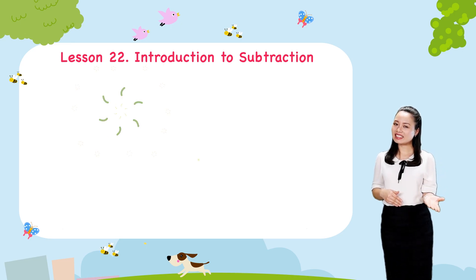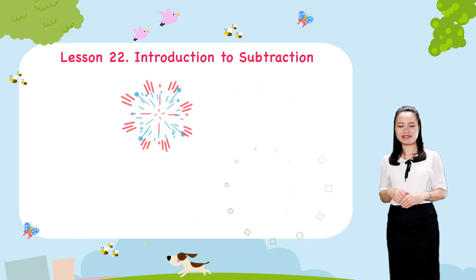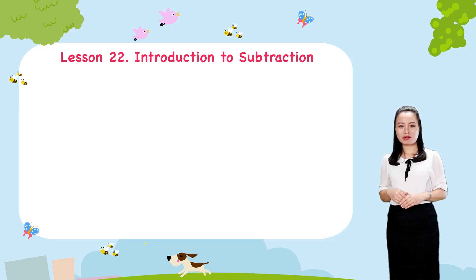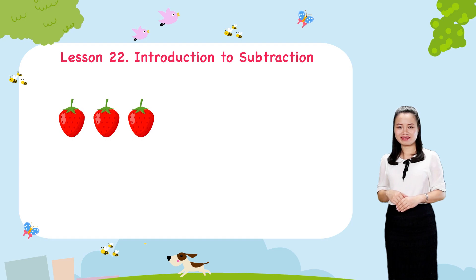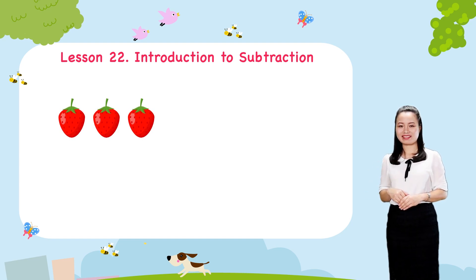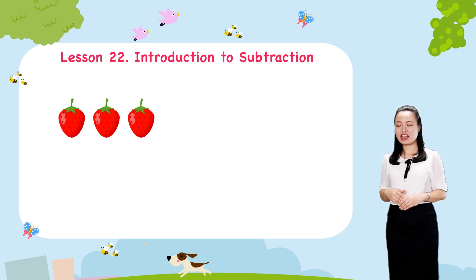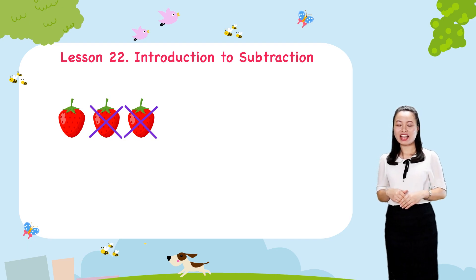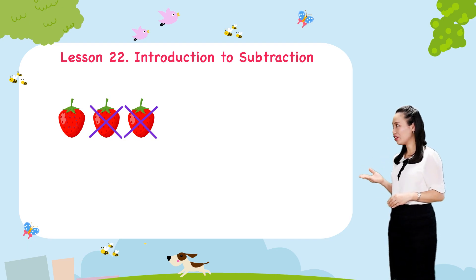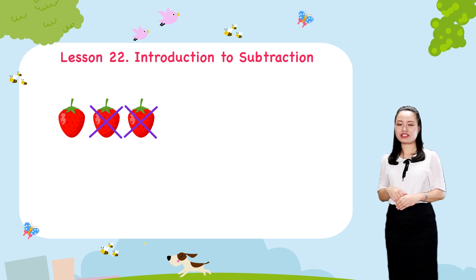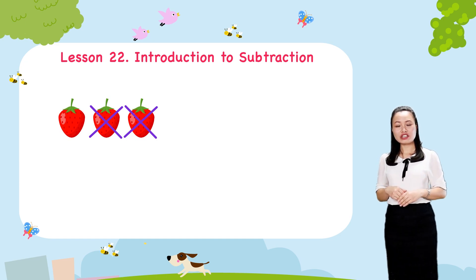Let's take another example. Suppose you have three strawberries. They look very delicious. So, you give your father two strawberries. Then, you have only one strawberry left.